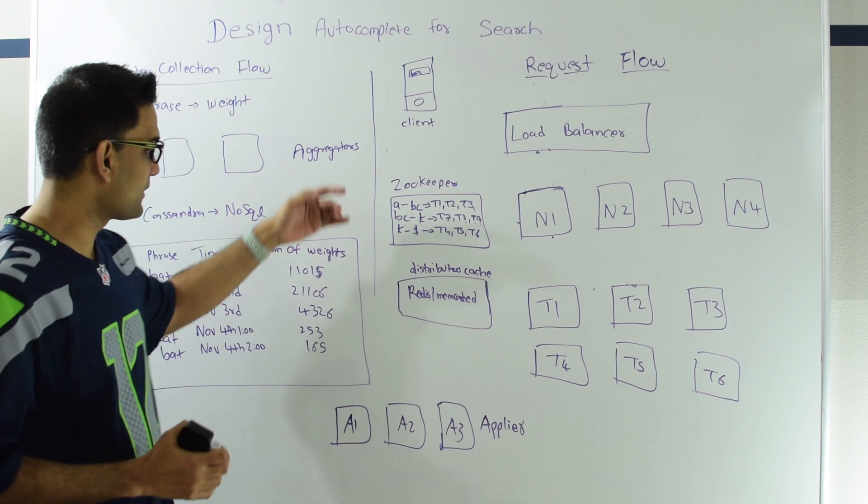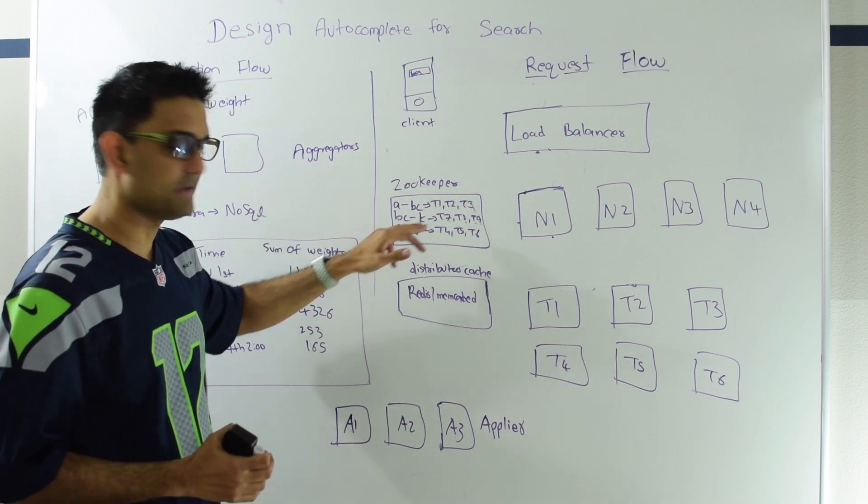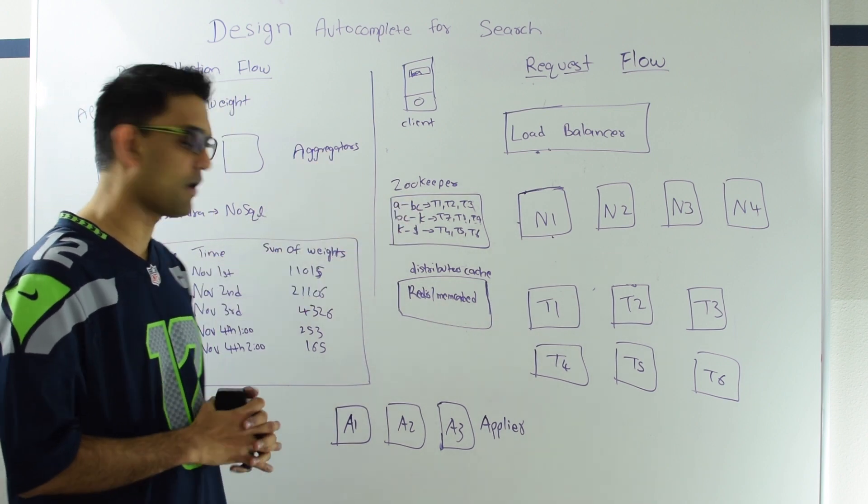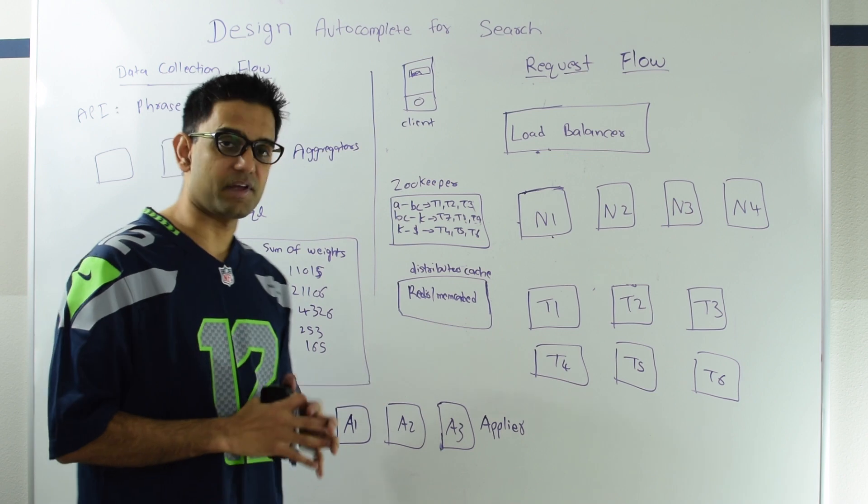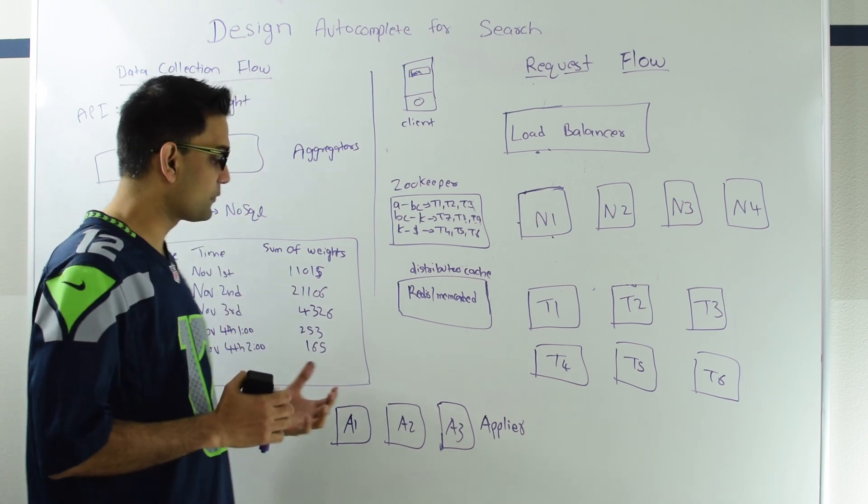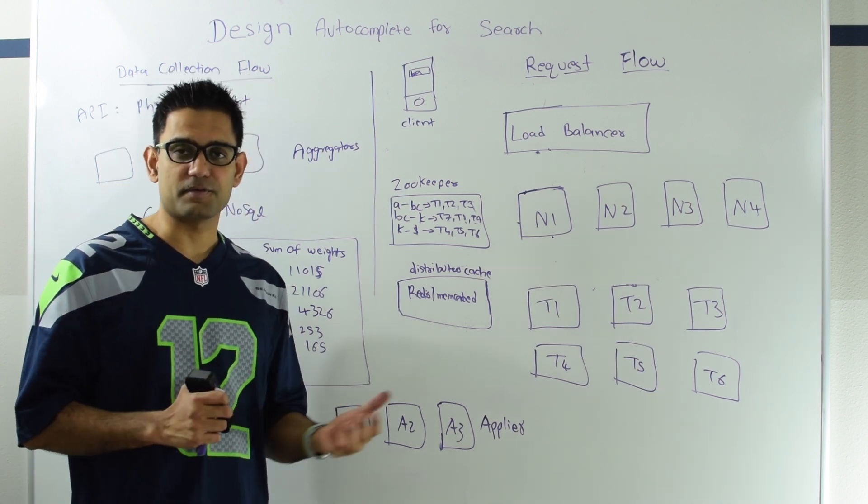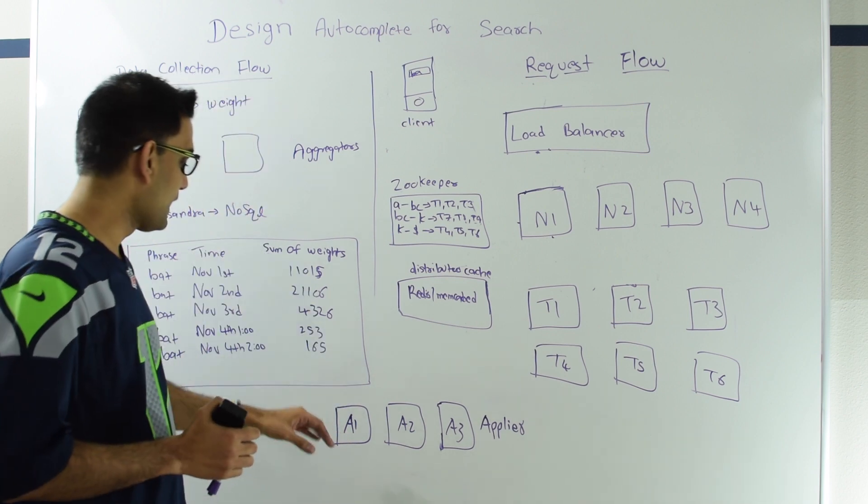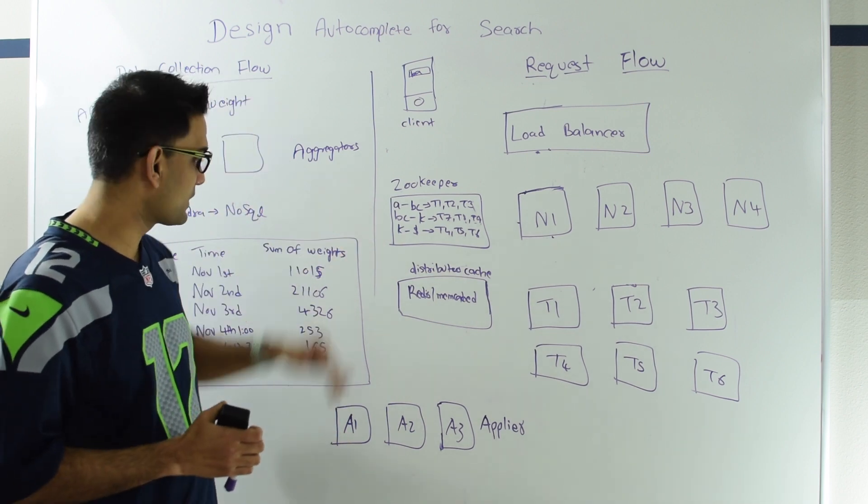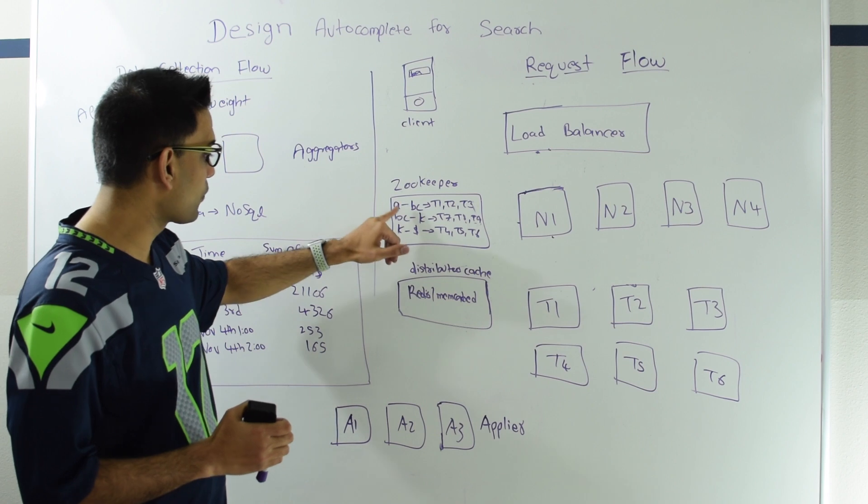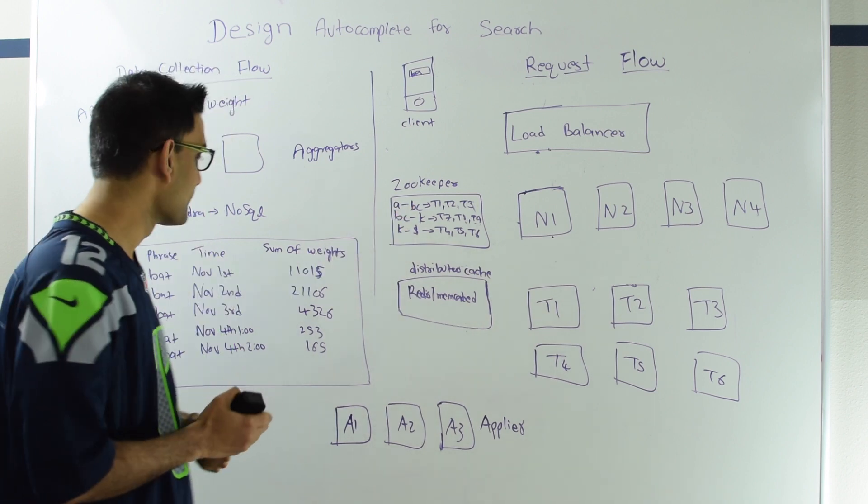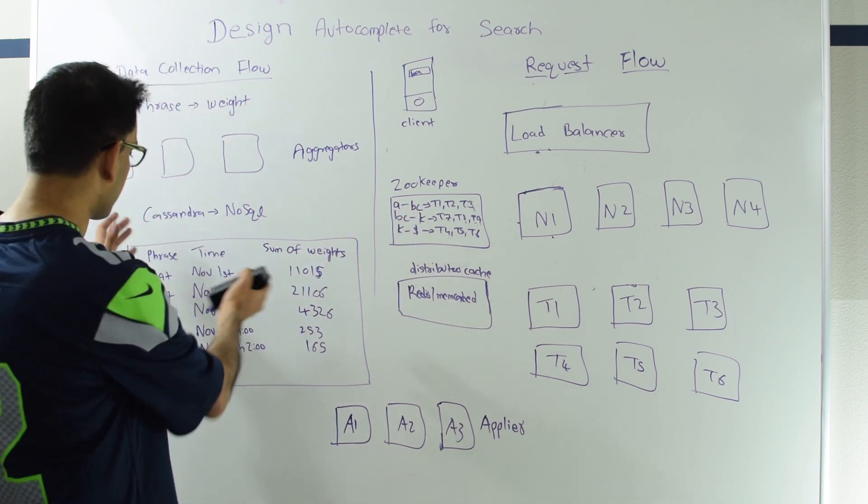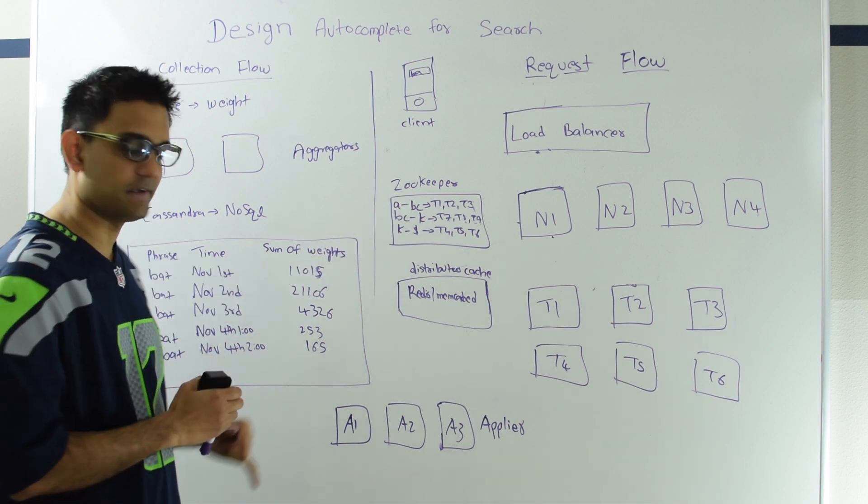Our appliers are going to get the data from this database and then apply them into the trie so that the requests can get that data. In our case, we have three ranges: A to BC, BC to K, and K to dollar. So we'll have three appliers. These appliers would run every 30 minutes or 15 minutes or some pre-configured interval, and then they will work on their respective range. So A1 will just work on range A to BC. He's going to get all the phrases from this database which are between A to BC.